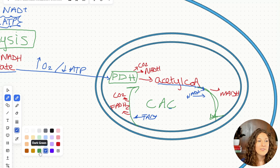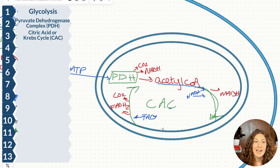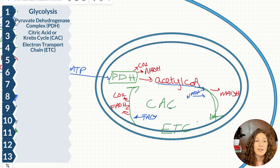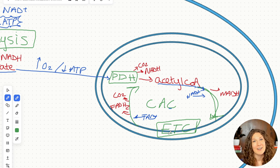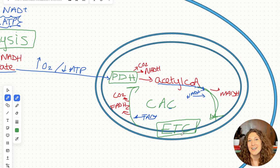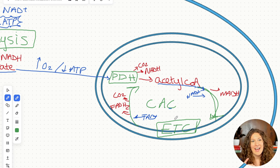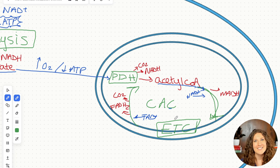Once we've gone through the citric acid cycle, our electron carriers go into the electron transport chain. The electron transport chain is embedded into the inner membrane of the mitochondria, so I draw it right below the citric acid cycle on the membrane. An interesting thing about the electron transport chain: complex II is the same enzyme as succinate dehydrogenase in the citric acid cycle — they literally share an enzyme in common.